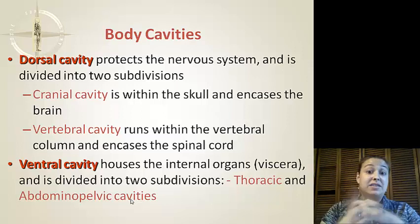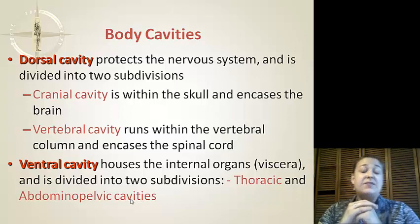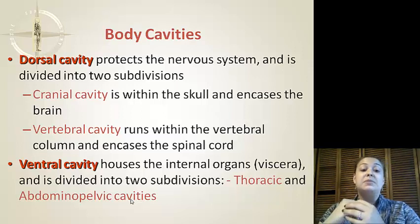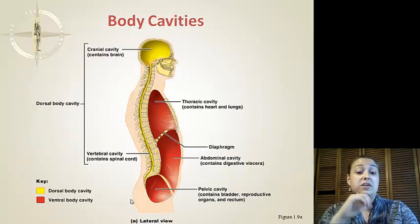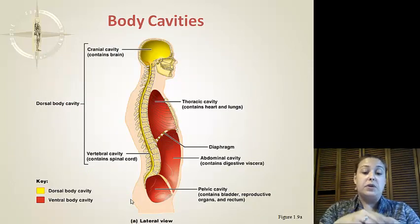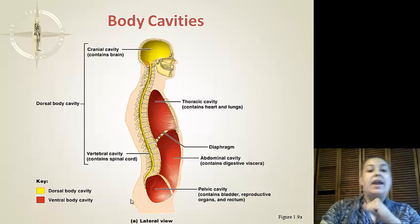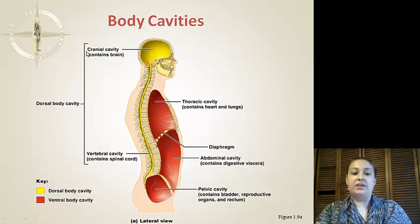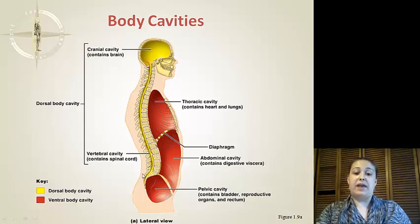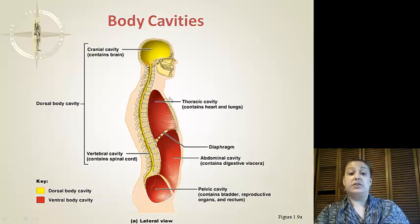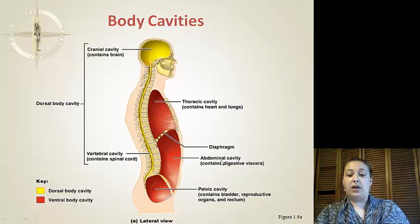The ventral cavity houses the internal organs, known as the viscera, and is divided into two subsections: the thoracic and the abdominal pelvic cavity. Looking at a lateral, or side, view: we have our dorsal body cavity housing the cranial and vertebral cavities — again, these two cavities are towards the back. And then we have the ventral cavity, which is towards the front, containing our thoracic cavity. It is separated by a diaphragm, and then we have our abdominal cavity and our pelvic cavity.